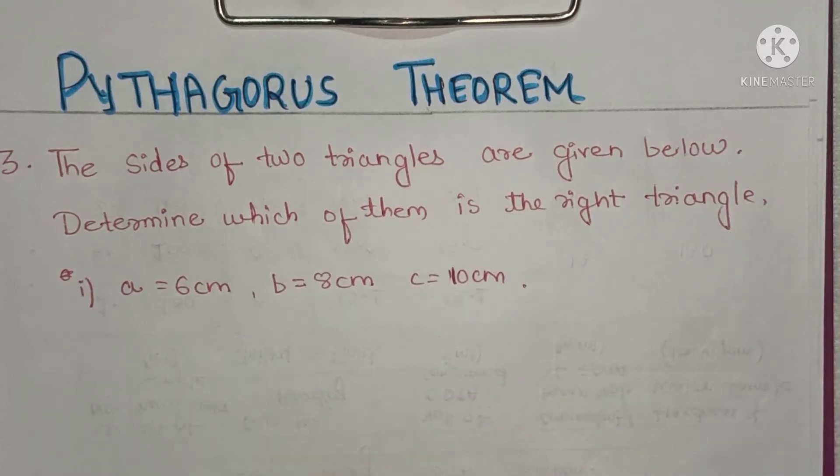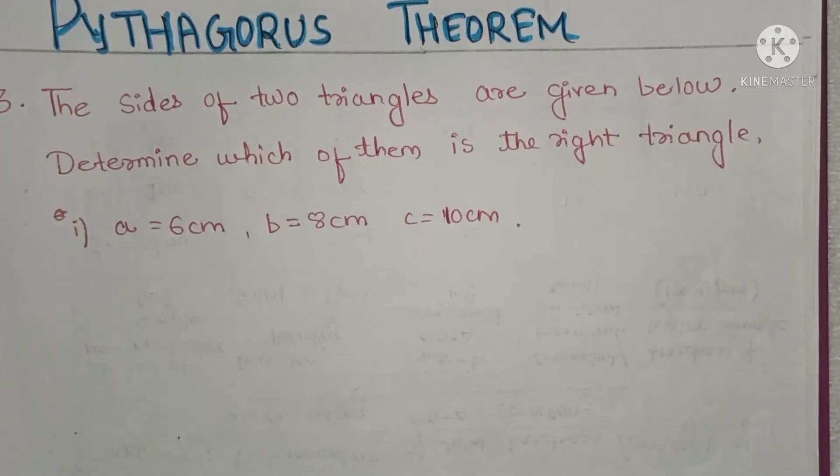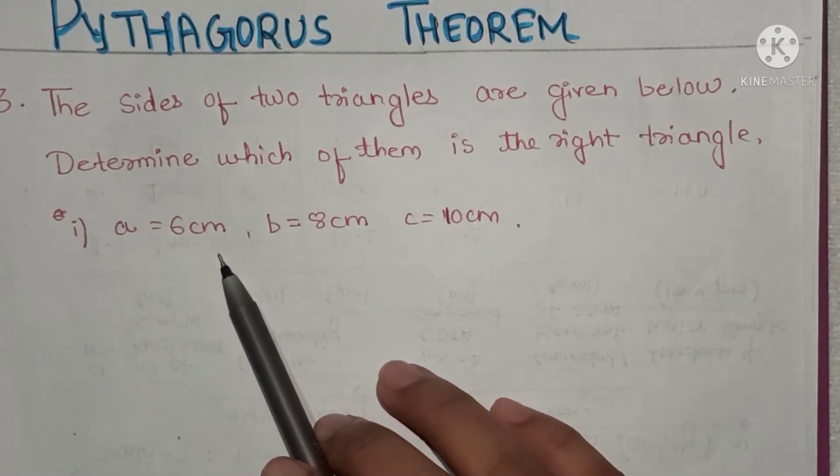There are two parts, number one and number two. We will do number one in this video. Number two you will try by yourself. Number one is a equals 6 centimeters, b equals 8 centimeters, and c equals 10 centimeters.